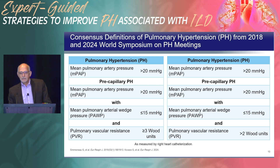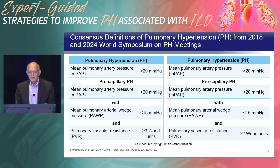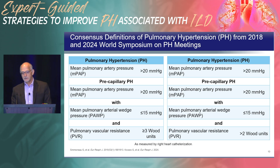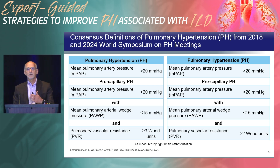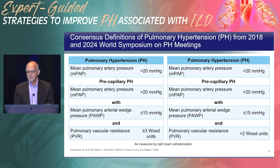This gives perspective on the change in definition between the 6th World Symposium in 2018 and the 2024 World Symposium held this past July. At the 6th Symposium, the threshold for pulmonary hypertension was lowered to greater than 20 millimeters of mercury. For pre-capillary pulmonary hypertension, the wedge must be less than or equal to 15. In 2018, the PVR had to be three units or above; at the 2024 World Symposium, the PVR threshold was lowered to greater than two.